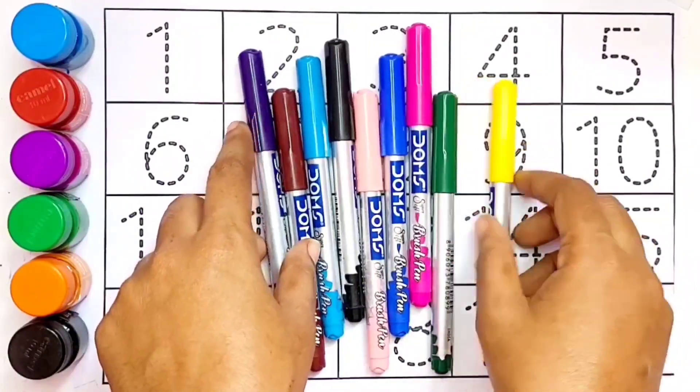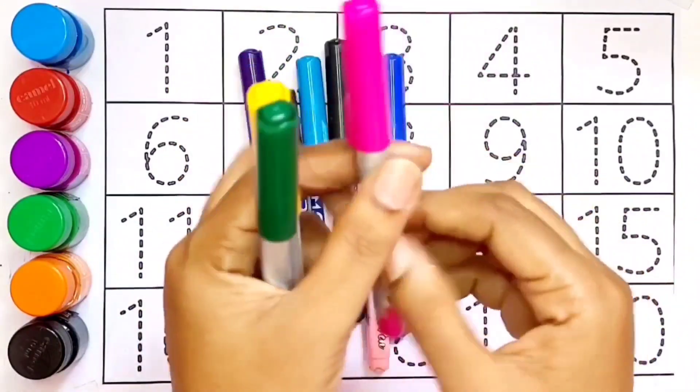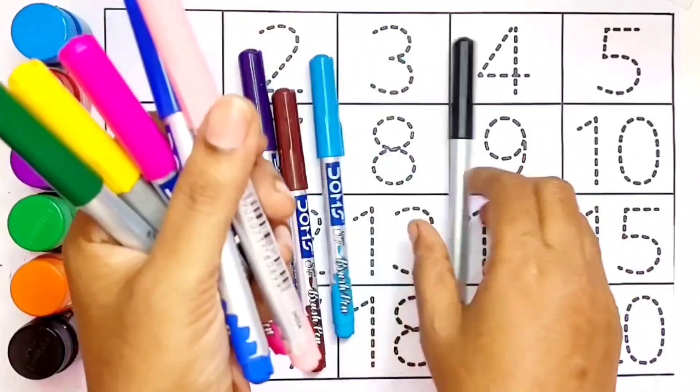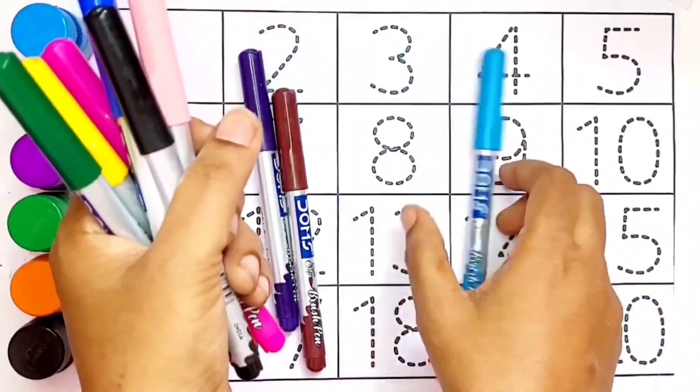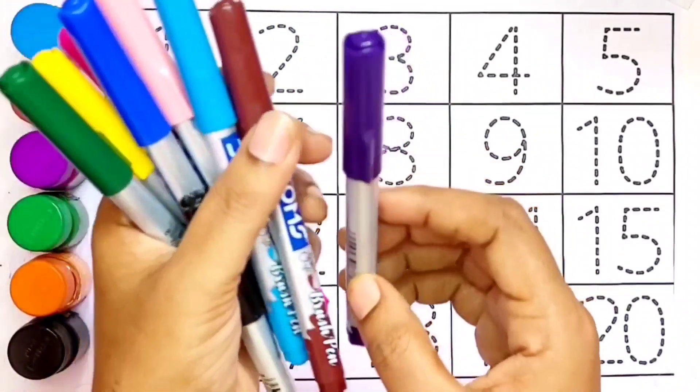Let's learn the colors name. Yellow, green, purple, blue, pink, black, sky blue, brown and violet color.